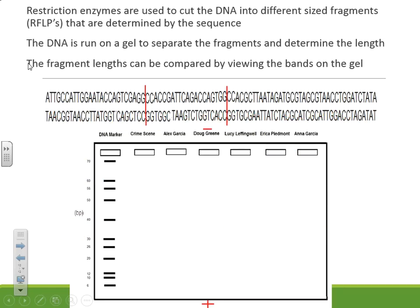Restriction enzymes are used to cut DNA into different sized fragments, determined by the sequence. If two people have a slightly different sequence of DNA, they're going to produce different sized fragments. This DNA is run on a gel to separate the fragments and determine their length. To figure out where fragments would be produced, we count the number of base pairs.